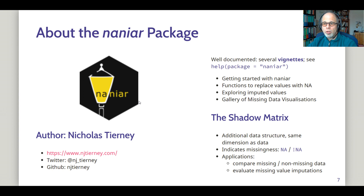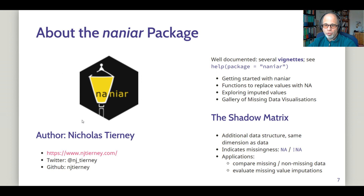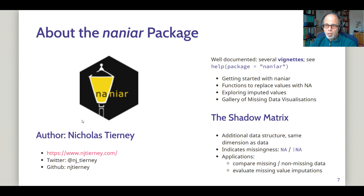Another idea that the NANIAR package introduces — which I won't go into detail on here for the sake of brevity — is the shadow matrix. It adds an additional data structure and associates it with your data. It has the same dimensions as the original data, and for each cell in the dataset it indicates missingness: NA or not NA. This can be very useful when you want to compare how missing values behave compared to non-missing data. You can use it as a grouping variable in ggplot2, for example, to give different colors to data that have missings somewhere versus those that don't.